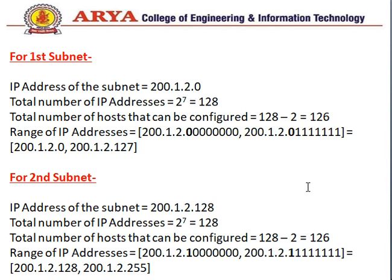For the first subnet, the IP address is 200.1.2.0. The total number of IP addresses is 2 to the power 7, which is 128. The total number of usable hosts is 126 (128 minus 2). The range is 200.1.2.0 to 200.1.2.127. For the second subnet, the IP address is 200.1.2.128, total IP addresses are 128, total usable hosts are 126, and the range is 200.1.2.128 to 200.1.2.255.